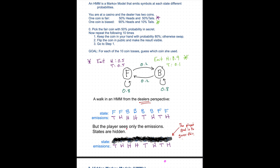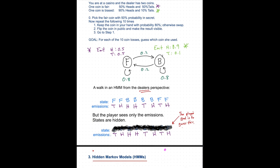If you're the player, you don't see the states — that's hidden from us. That's why it's called the hidden Markov model. We only see the emissions: the sequence of heads and tails. Our goal is to guess the state sequence — we want to guess FFBBBBFF. Make sure you understand the difference between what the dealer sees and what the player sees.